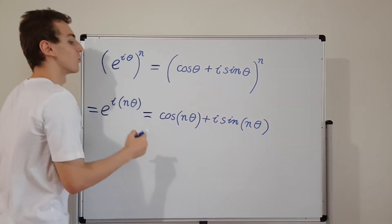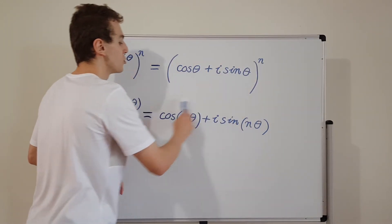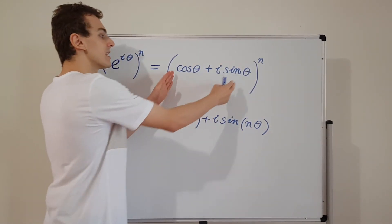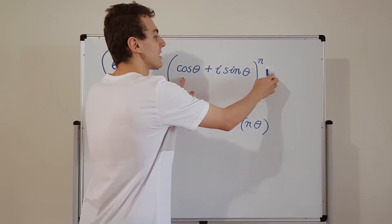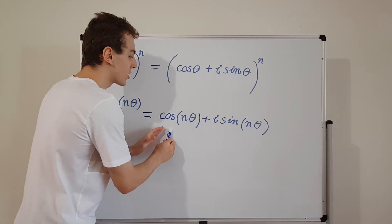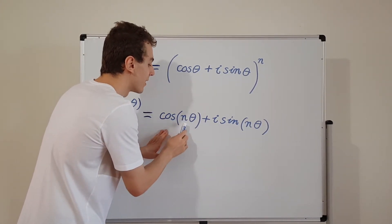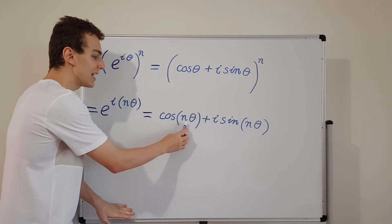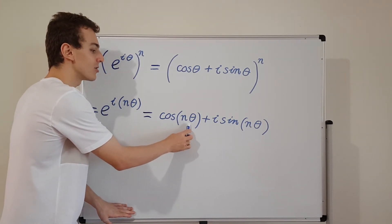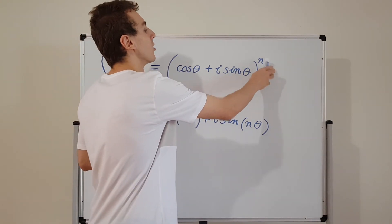And this is actually de Moivre's theorem. De Moivre's theorem says that this is equivalent to this. So taking this combination and raising it to the power of n is the same as taking this cosine and this sine and inputting the angle multiplied by n. So multiplication inside the argument over here is actually the same as raising this whole expression to the power of n.